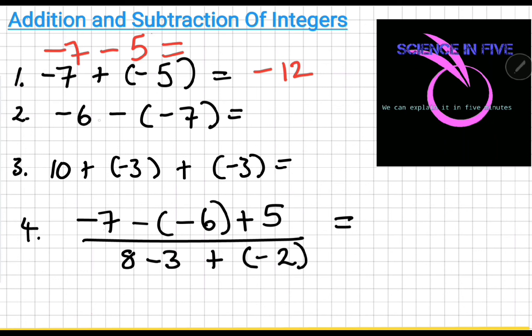Minus six minus minus seven. Again, here we said convert the negative sign to an addition sign because we are subtracting a negative number. So this becomes minus six plus seven which becomes positive one.